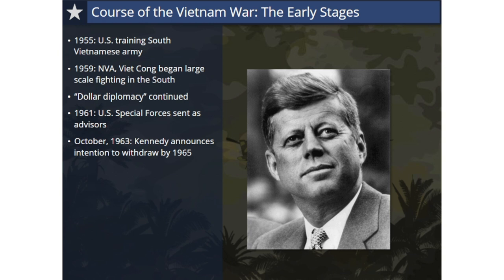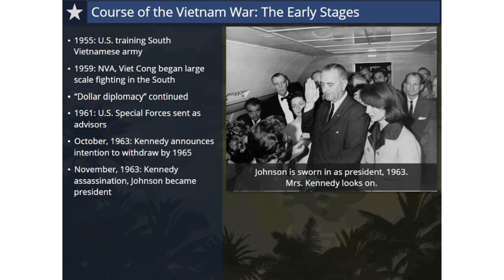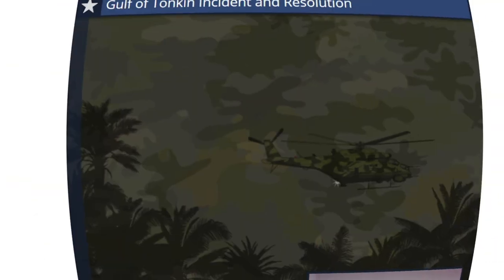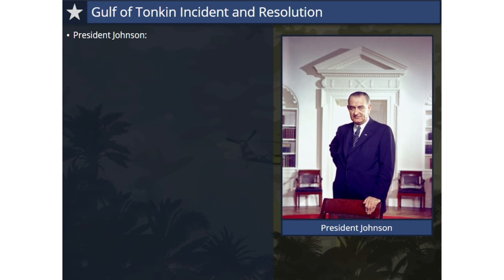In October 1963, Kennedy announced his administration's intention to withdraw U.S. forces from South Vietnam by the end of 1965, but one month later Kennedy was assassinated. His vice president, Lyndon Johnson, assumed the presidency, and the direction of the war now fell upon his administration's shoulders. By the end of 1963, America's military forces serving in Vietnam as advisers totaled over 16,000.